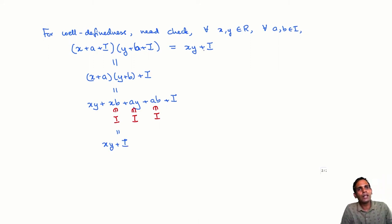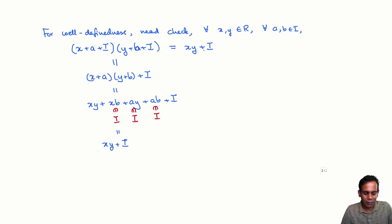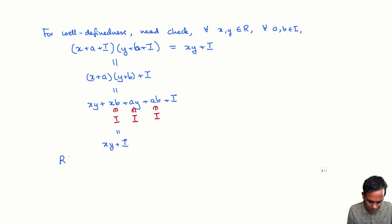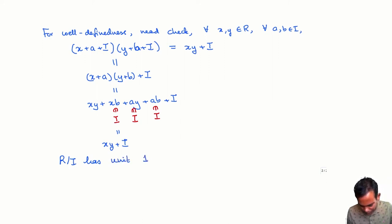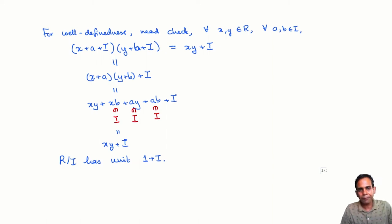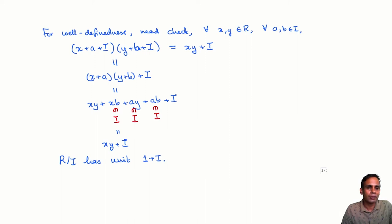So the product is well-defined. Then you need to check properties like associativity of the product, that there is a unit, and that it distributes over addition. These are easily checked, inherited from the corresponding properties of the ring R. The unit of R mod I is just the coset of the unit in R. The only issue is when I equals R; then R mod I is trivial and this ring cannot have a unit.